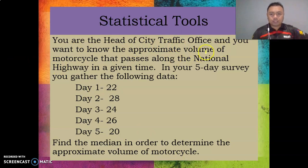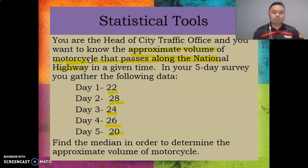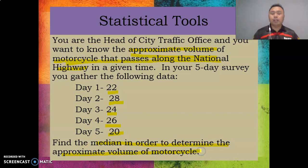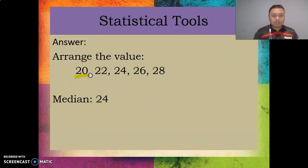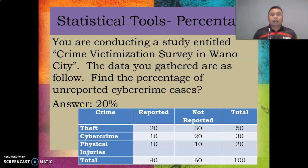Now how do we apply the median? You are the head of the city traffic office and you want to know the approximate volume of motorcycles passing along the national highway. In your five-day survey: Day 1 had 22, Day 2 had 28, Day 3 had 24, Day 4 had 26, and Day 5 had 20. Arrange the values from least to greatest: 20, 22, 24, 26, 28. The middle number is 24, so the median is 24.